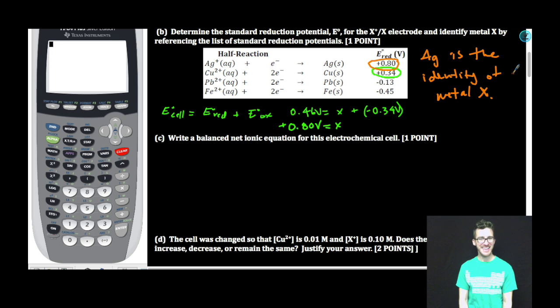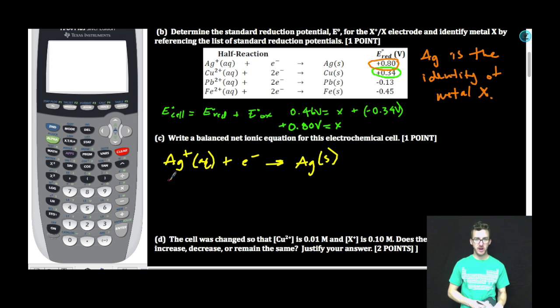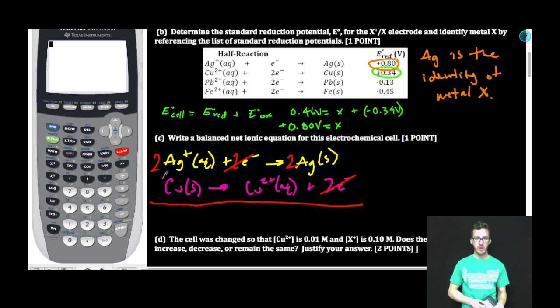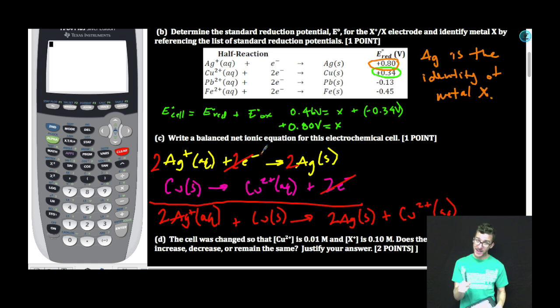Part C: Write a balanced net ionic equation for this electrochemical cell. All right, we just determined that silver is being reduced, and that copper is being oxidized. We need to check and make sure that we are gaining as many electrons as we're losing. To do that, we need to multiply our reduction half-reaction by a factor of two. Now our electrons will cancel out. So when we sum these half-reactions together, we end up with: